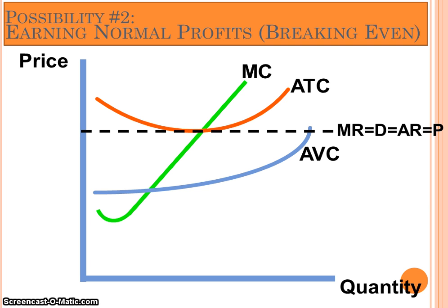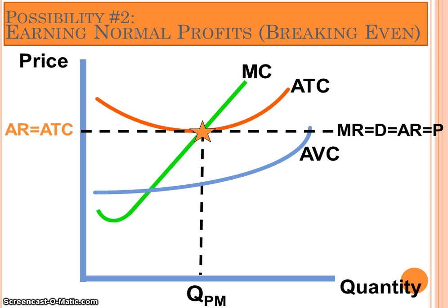To identify the profit-maximizing level of output for this producer, identify the quantity where MR equals MC, or where Mr. DARP crosses the marginal cost curve. In the graph in your practice problem packet, that's at approximately 7 units of output. In this situation, the reason we know this firm is breaking even is that average revenue at the profit-maximizing level of output is equal to average total cost. So there's nothing left over — you're not making profits or experiencing any losses.